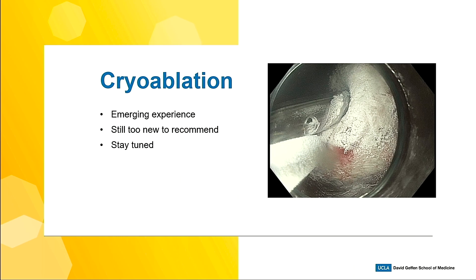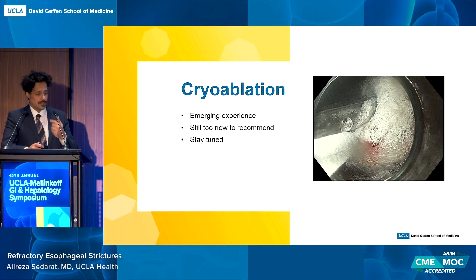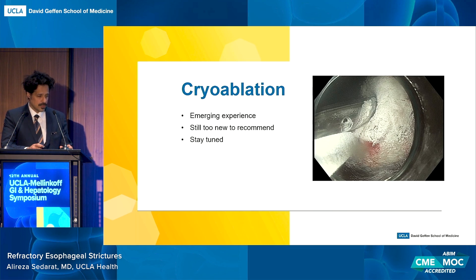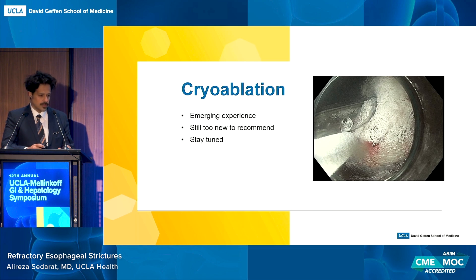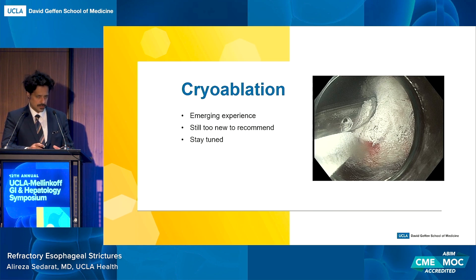Cryoablation: this is a patient with a very refractory stricture I treated not too long ago. The catheter is the white thing, the clear thing is the decompression tube, and the frost is the cryoablative effect. I've used it out of desperation in a carefully consented patient. There's an emerging experience in a few centers, but it's still too new to be part of the algorithm.